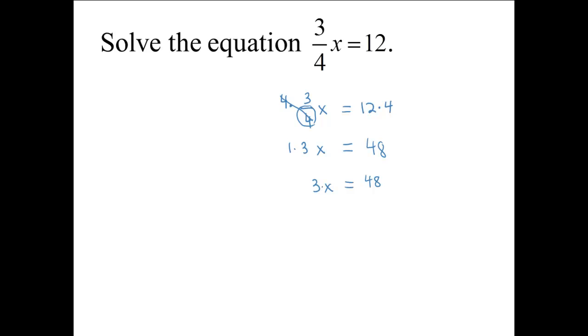Secondly, we undo multiplication by 3 through the inverse of multiplying which is division. We will divide both sides by 3. 3 divided by 3 is 1, 1 times x, or more simply x, and 48 divided by 3 is 16. So our solution is x equals 16.